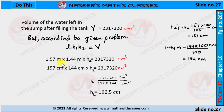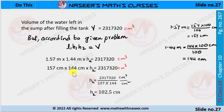Converting: 1.57 meters = 157 centimeters and 1.44 meters = 144 centimeters. So it can be written as 157 cm × 144 cm × H2 = 2,317,320 cubic centimeters. Therefore H2 = 2,317,320 ÷ (157 × 144).